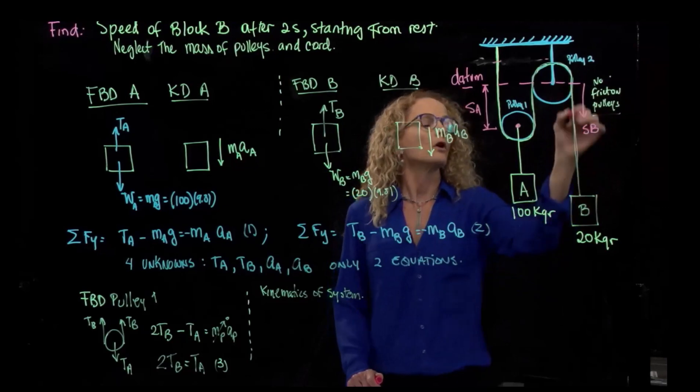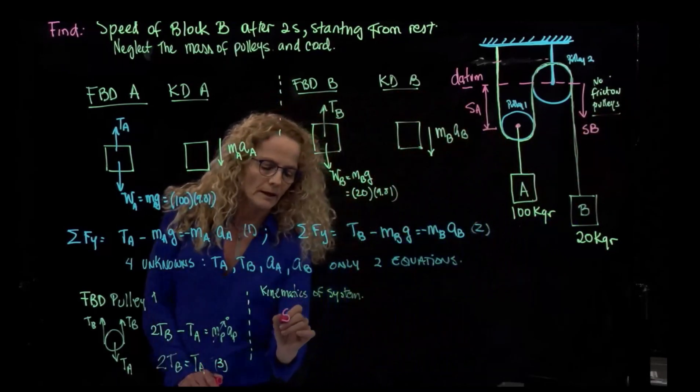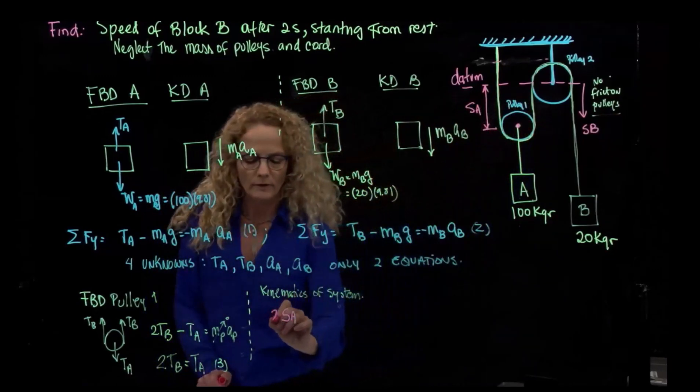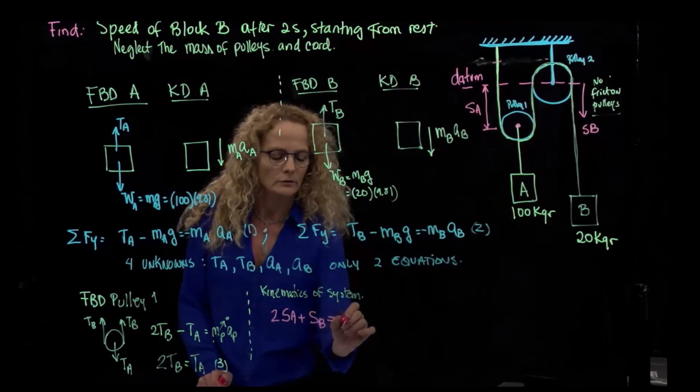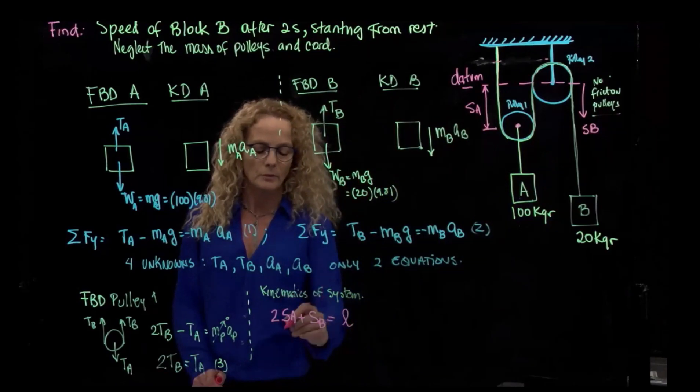So all the chord, the total chord, so it will be SA plus another SA, so it's 2SA plus SB, will be equals to the total length of the chord. If we derive this expression, we get that 2, the velocity of A plus the velocity of B is equals to zero.